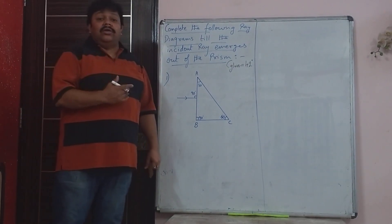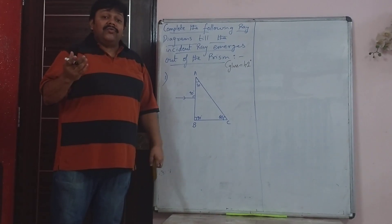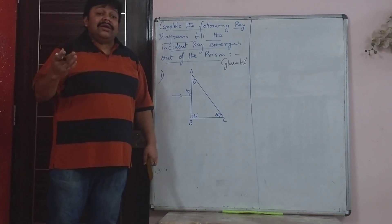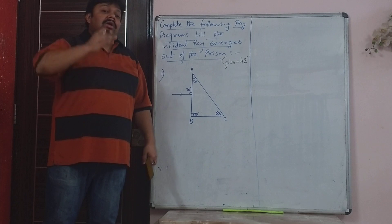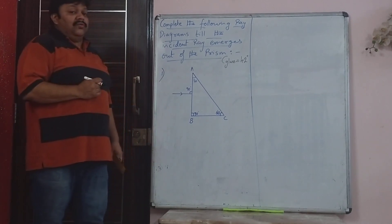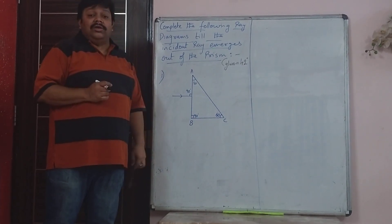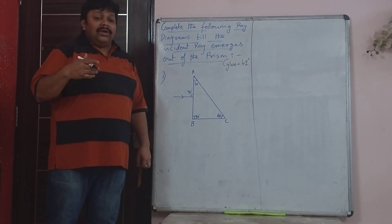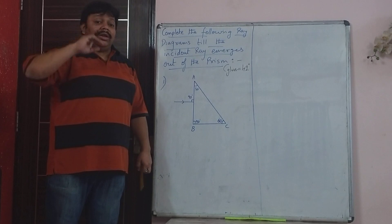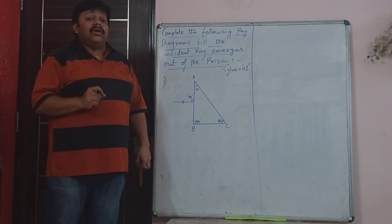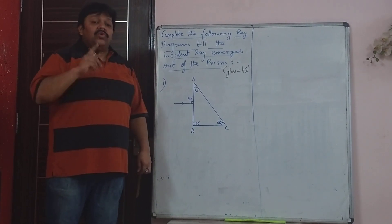If the angle of incidence equals the critical angle, the angle of refraction will be 90 degrees — the ray just grazes the surface of the two media and comes along the surface. And the last case: if the angle of incidence is greater than the critical angle of glass, then the ray will get totally internally reflected. So in all cases, you compare the angle of incidence with the critical angle of glass.